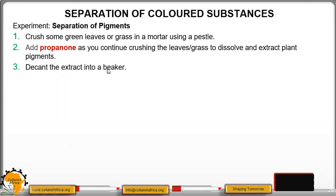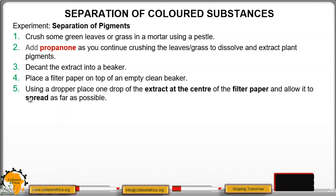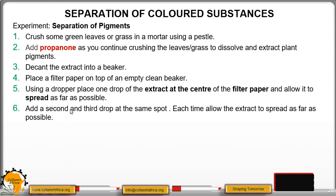Decant the extract into a beaker. Then, place a filter paper on top of an empty, clean beaker. Using a dropper, place one drop of the extract at the center of the filter paper and allow it to spread as far as possible. Add a second and a third drop at the same spot.